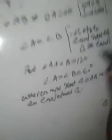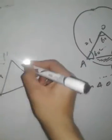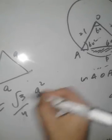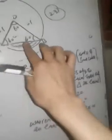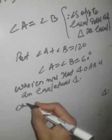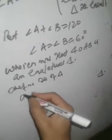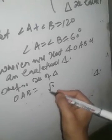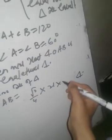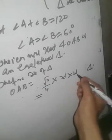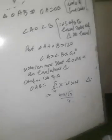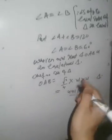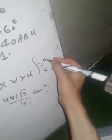Since triangle OAB is equilateral, to find its area remember the formula: area of equilateral triangle with side A equals (√3 / 4) × A². Here all sides are 21 centimeters. So area of triangle OAB equals √3 / 4 × 21 × 21, which equals 441√3 / 4 square centimeters.